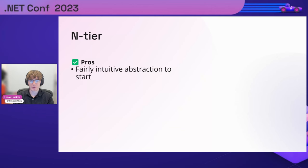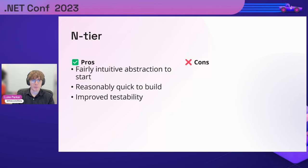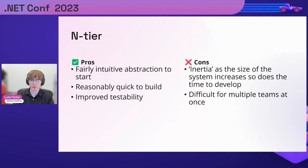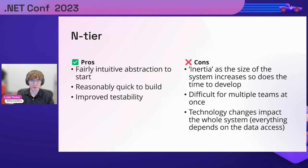There are pros to it: it's fairly intuitive, there's not tons of abstraction, and it's fairly quick to build since you're mainly writing code without heaps of abstraction. There's better testability — still not awesome, but better than the monolith. However, it suffers from the same inertia problem: as your codebase and product grow, the cost to develop increases exponentially. It's still difficult for multiple teams — it will become a tangled mess over time — and technology changes still impact the whole system.